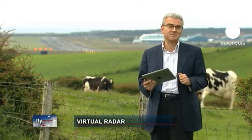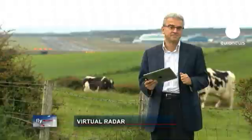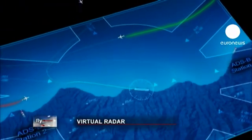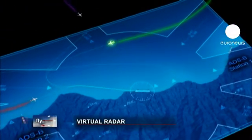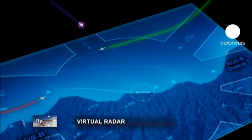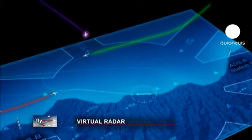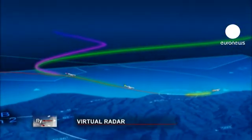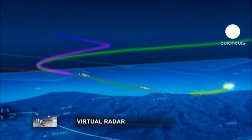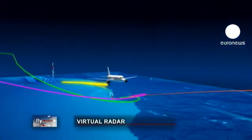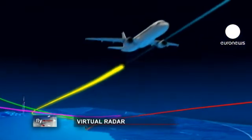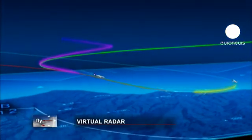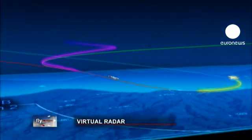It is also environmentally friendly. It's called ADS-B, which stands for Automatic Dependent Surveillance Broadcast. It's a system that relies on aircraft broadcasting their identity, position, and other information taken from their onboard systems. The signal can be captured for surveillance purposes on the ground or onboard other aircraft.